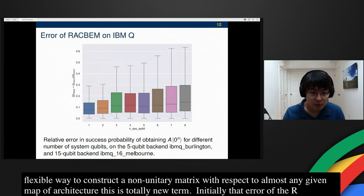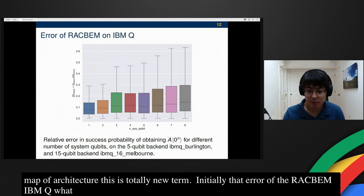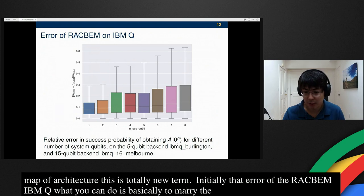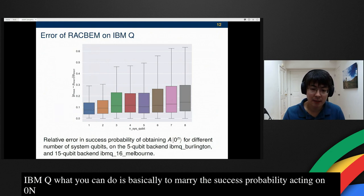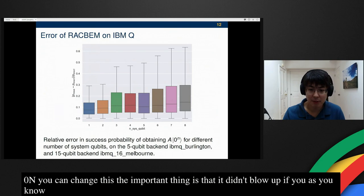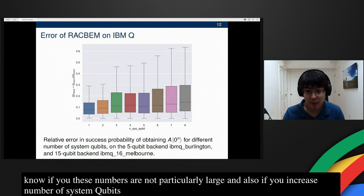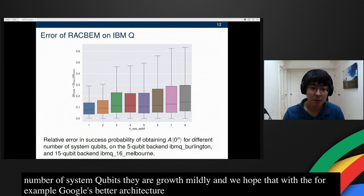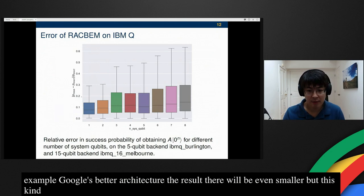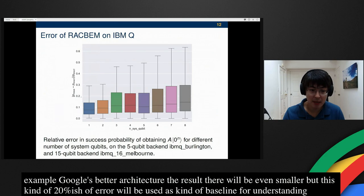Let me show you the error of the RACBEM on IBM Q. What you can do is basically to measure the success probability of measuring zero and to get this A acting on zero n. Of course, you can change this thing. The important thing is that it didn't blow up. As you know, these numbers are not particularly large. And also, if you increase the number of system qubits, the growth is relatively mild. We hope that with, for example, Google's better architecture, the result of the error will be even smaller. But this kind of 20%-ish relative error will be used as a kind of baseline for understanding the results of a quantum LINPACK and other results later.